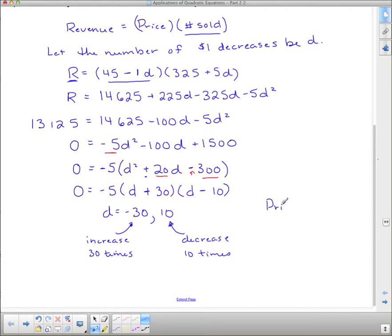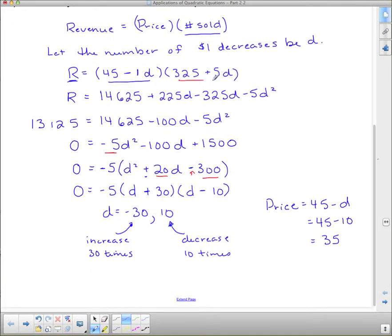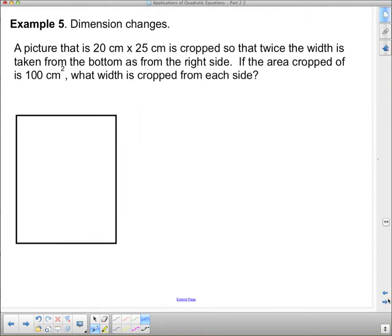Price equals 45 minus d. So we need 45 minus 10 or $35. So they should sell it for $35. And we'll look at part b. It says how many shirts will be sold at this price. Well, this up here is the shirt function. So the number sold will equal 325 plus 5 times 10, which means they're going to add on another 50 shirts for 375 shirts. So they will sell 375 shirts for $35 in order to maximize school spirit.